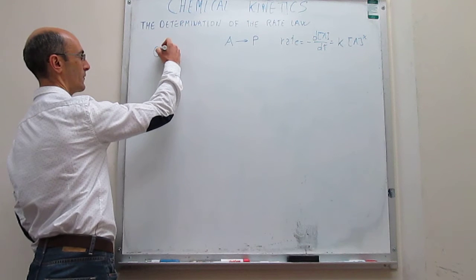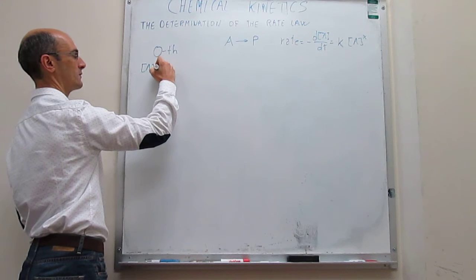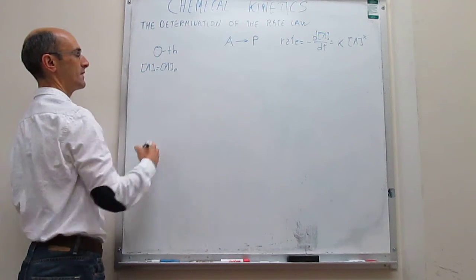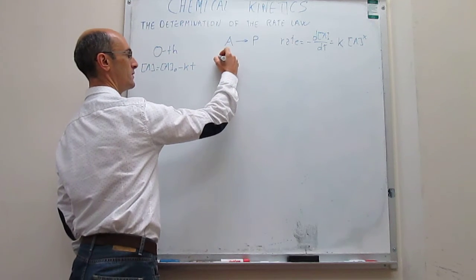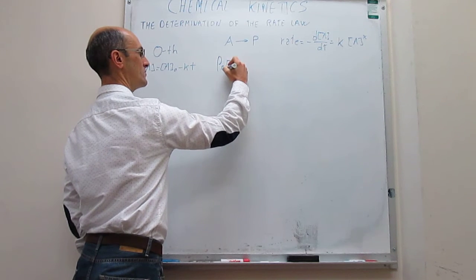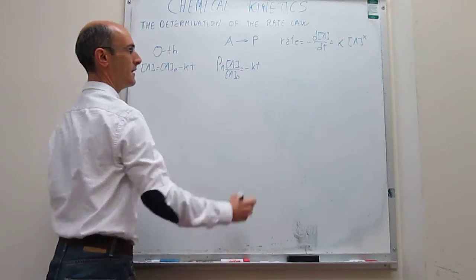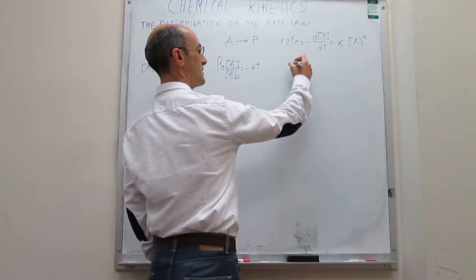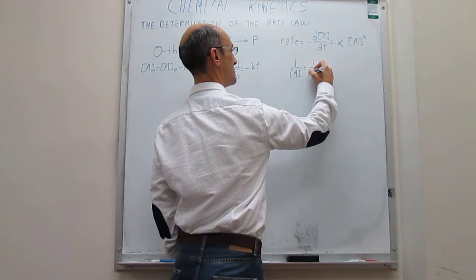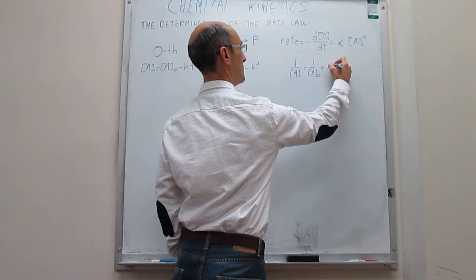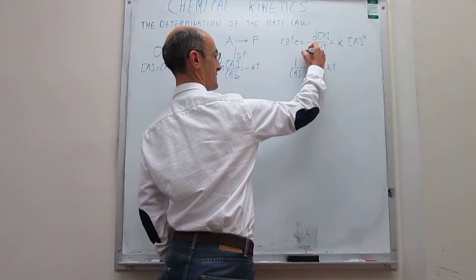For example, if the reaction is zeroth order, the integrated rate law is: [A] = [A]₀ − kt. For a first order reaction, the concentration changes as ln([A]/[A]₀) = −kt. And for a second order reaction with one reagent, the integrated rate law is: 1/[A] = 1/[A]₀ + kt. To summarize: the first expression is for zeroth order, the second for first order, and the third for second order.